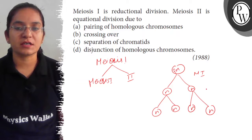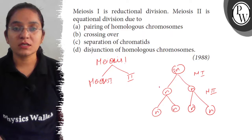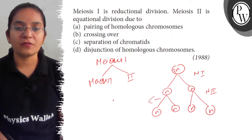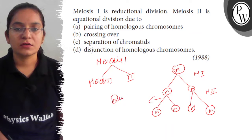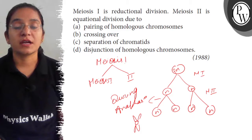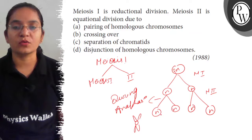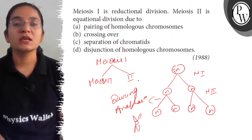This division is equational division because during anaphase, the separation of chromatids occurs — the sister chromatids separate from the centromere. As the separation of chromatids occurs and the chromosome number remains the same, this is equational division.